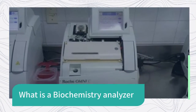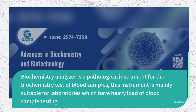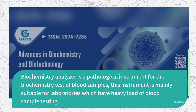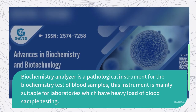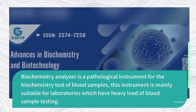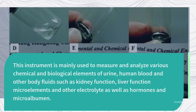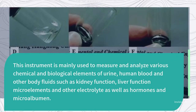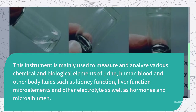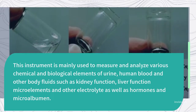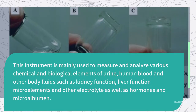A biochemistry analyzer is a pathological instrument for the biochemistry test of blood samples. This instrument is mainly suitable for laboratories which have a heavy load of blood sample testing. It is mainly used to measure and analyze various chemical and biological elements of urine, human blood, and other body fluids — such as kidney function, liver function, microelements, electrolytes, hormones, and microalbumin.